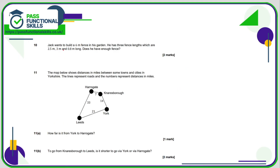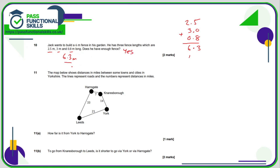Question 10 — non-calculator. Add the digits: we've got 2.5, 3, and 0.8. Write 3 as 3.0. Put the decimal point in the answer column. 8 plus 5 is 13, so write 3 and carry the 1. 1 plus 3 plus 2 is 6. So this comes to 6.3 metres. If he wants to build a 6-metre fence, then yes, he definitely has enough.